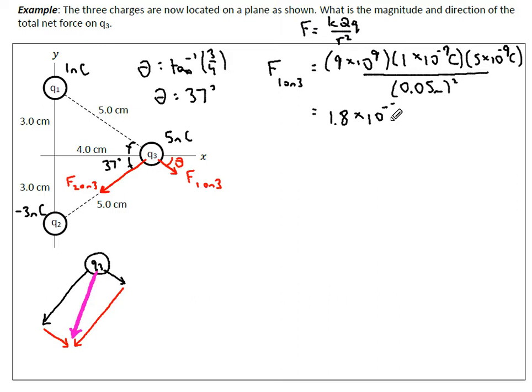Now we're looking at 2 on 3. It's almost the exact same formula. We have that 9 times 10 to the 9. But the only difference, instead of having a charge of magnitude 1, it's a magnitude of 3. Same distance, 0.05 meters.